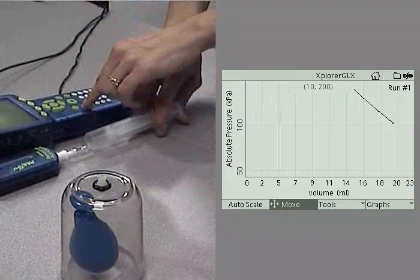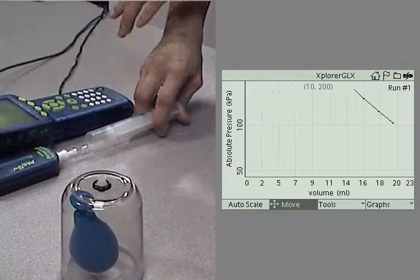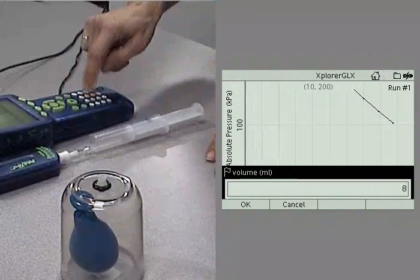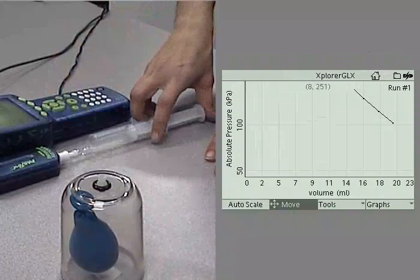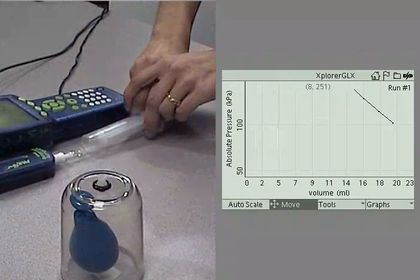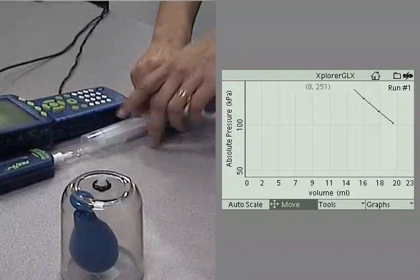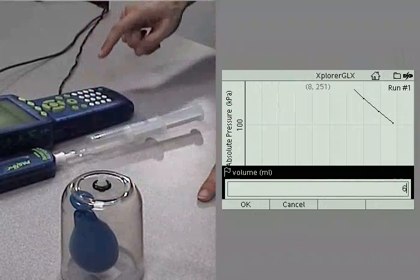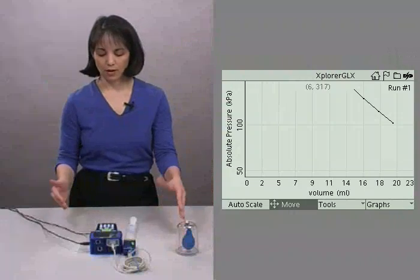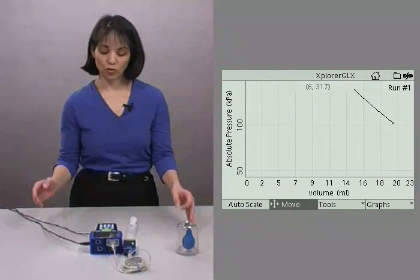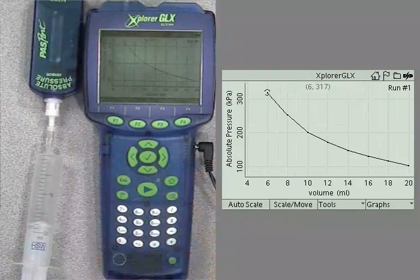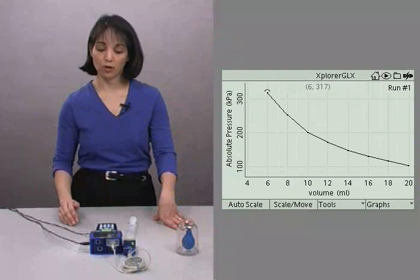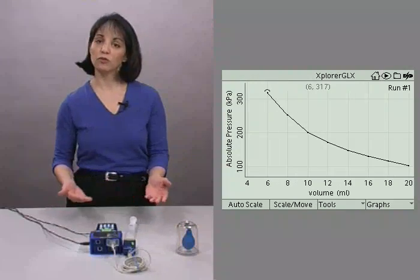Hit the flag. Make sure we're there. Type in 8. OK. And the last one, 6. And hit the flag. Type in 6. And OK. And it looks like now we only have three data points. But if you auto scale, there is our curve. So let's go ahead and push the start stop button again to end this data run. And you see that we have a nice beautiful curve.